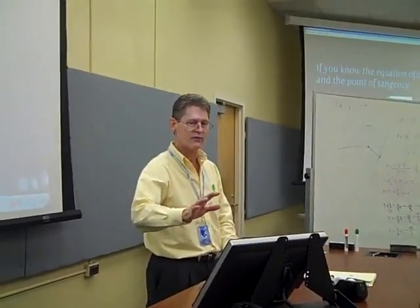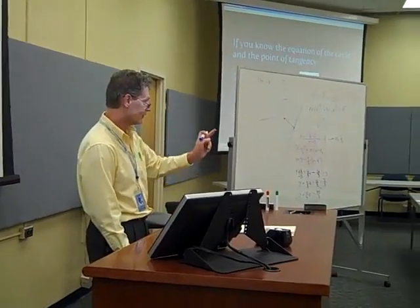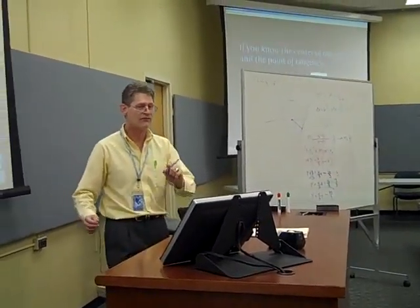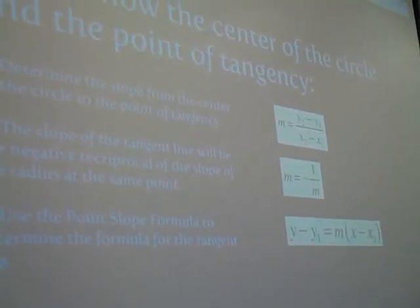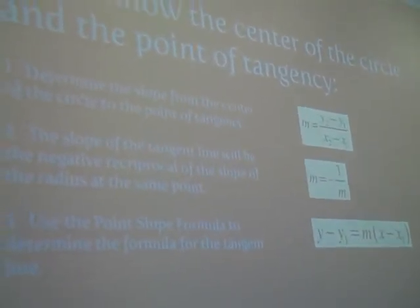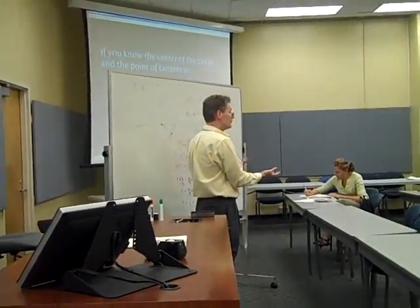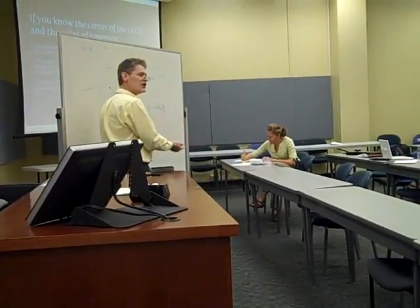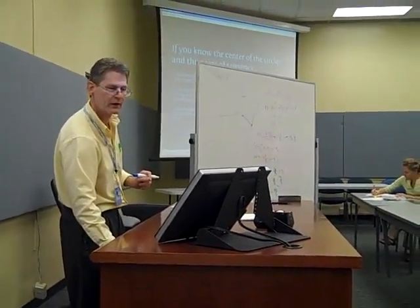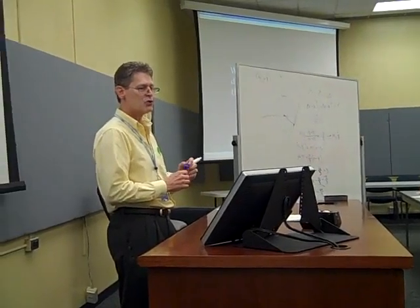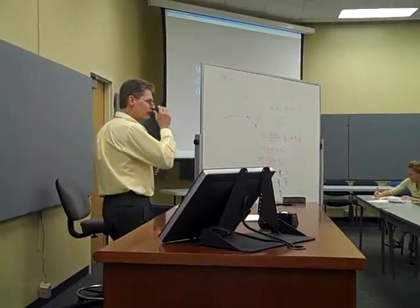So that's if you have the equation of the circle and the point of tangency. To your question, what if you have the center of the circle and the point of tangency? Well, we've sort of already done that, right? Because all we did was we got the circle, we got the center of the circle out of the equation, and then we did this. So if we're given the center, do we do anything different? No. We do the exact same thing. Now let's look at one other example.